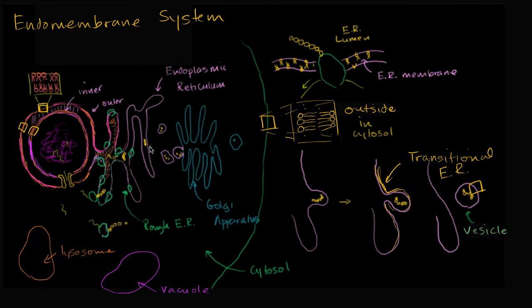But just as a review, these proteins can emerge from the transitional ER. They can make their way to the Golgi apparatus. And we've already talked about how in the Golgi apparatus, these proteins can be matured. And when I say matured, there's a bunch of enzymes in here.